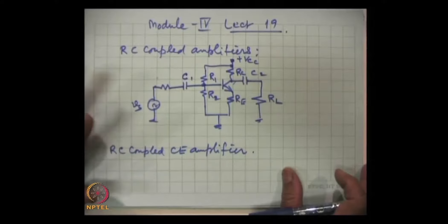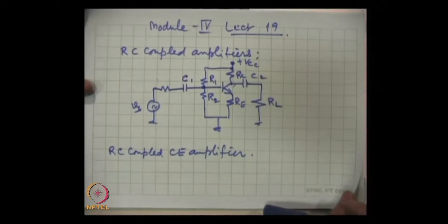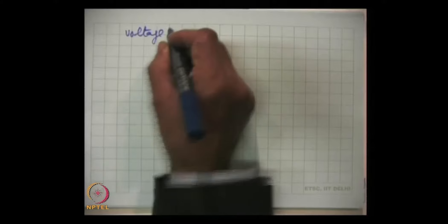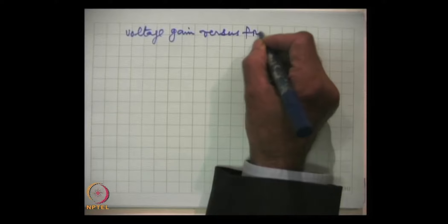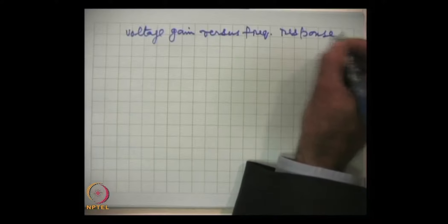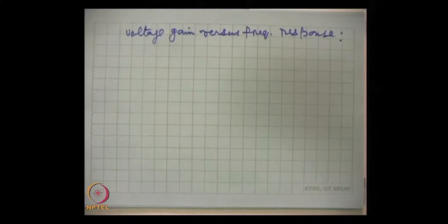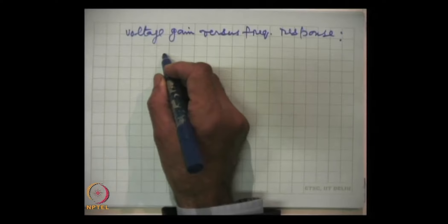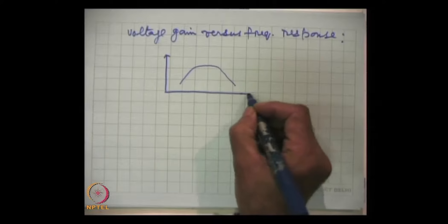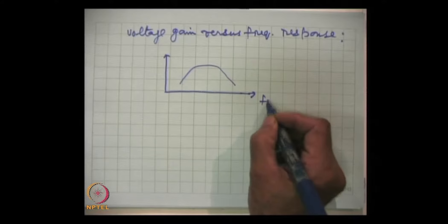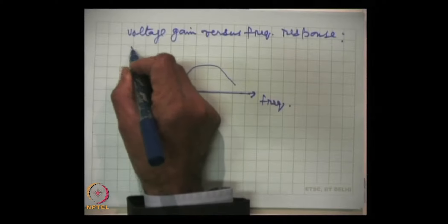For this amplifier, or in general for any amplifier, the voltage gain versus frequency response is a very important characteristic. In general, we get a response of this kind. The horizontal axis is frequency and the vertical axis is voltage gain.